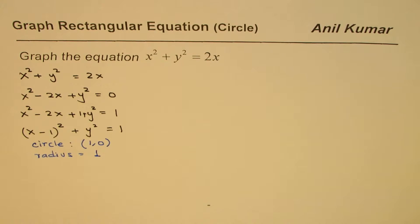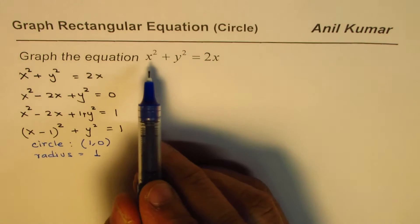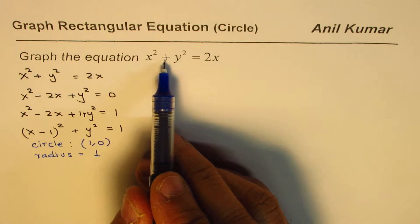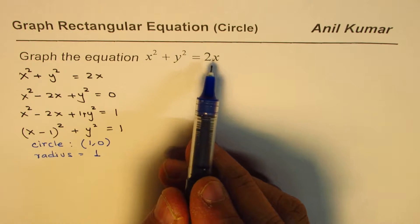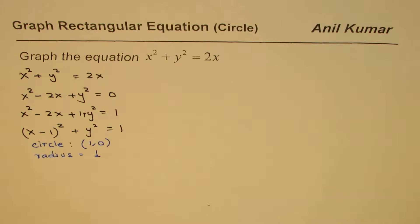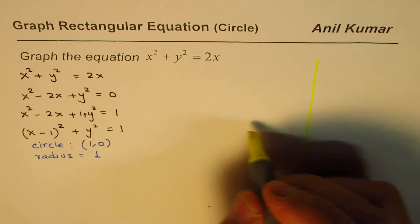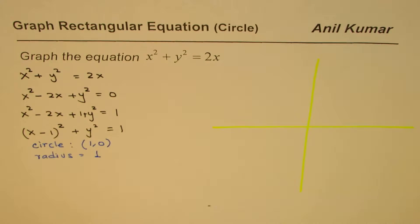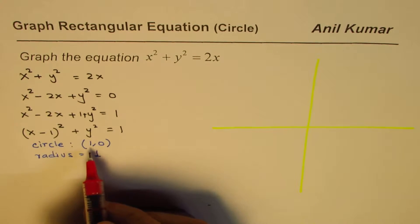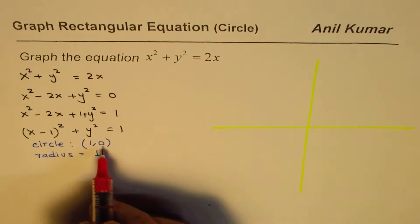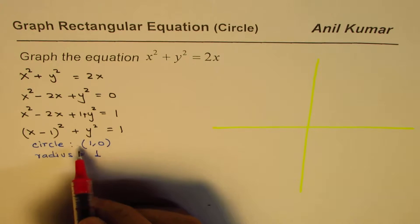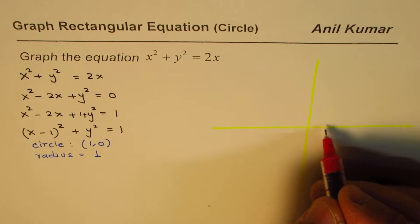So in rectangular coordinates, x squared plus y squared equals 2x represents a circle. If I have to sketch this, we get a circle which has a center at (1, 0), meaning it is shifted right by 1 unit.